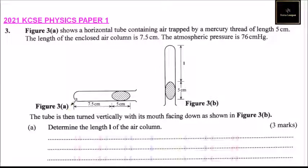So we have figure A, we have figure B. The tube is then turned vertically with its mouth facing down as shown in figure 3B. Determine the length of the air column.